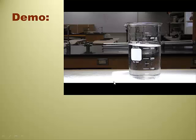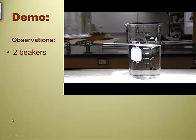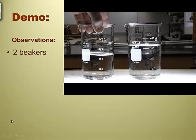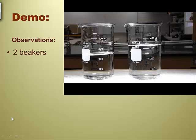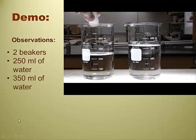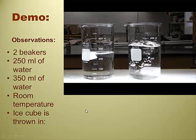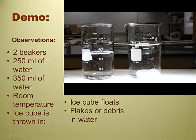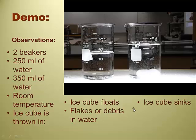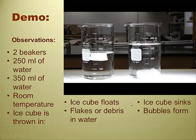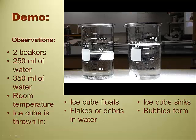Here's a little demo. We want you to write down some observations as you see it. It looks like a beaker — not just one beaker, but two beakers. The beaker on the left is approximately 250 mils, the beaker on the right around 350 mils. Obviously water — and there's ice. An ice cube was thrown in. The ice cube floats in one, but in the other the ice cube sank and bubbles have formed. Look at all the bubbles on the right. That one's definitely floating, that one's definitely sunk.